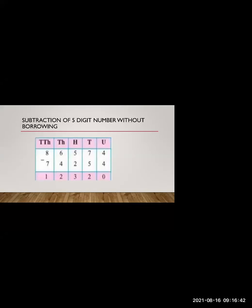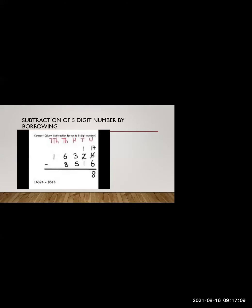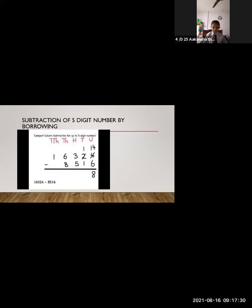In the last lecture we learned about subtraction of five digit numbers without borrowing. We subtracted three digit numbers, four digit numbers, and similarly five digit numbers without borrowing. In this lecture, we are going to learn about subtraction of five digit numbers by borrowing, just as we do addition with or without carrying.